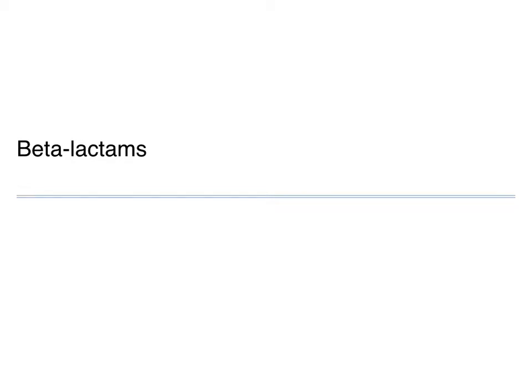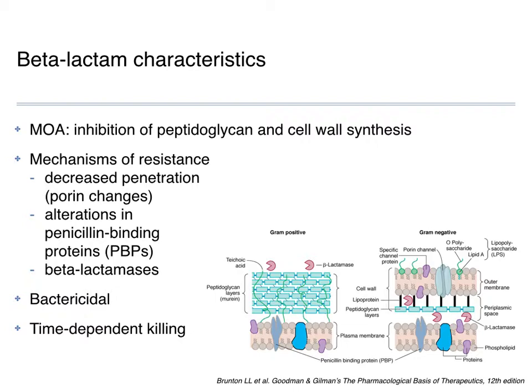First are the beta-lactams. These agents work by inhibiting cell wall synthesis, covering either gram-positives or gram-negatives. Gram-positives have a thick cell wall; gram-negatives have a thinner cell wall with a cell membrane on the outside. These drugs inhibit the normal production of cell walls, so you lose the integrity of the bacterial cell. Hence these drugs tend to be bactericidal agents. Static drugs simply inhibit growth and depend on the immune system, whereas bactericidal drugs are lethal against bacteria.